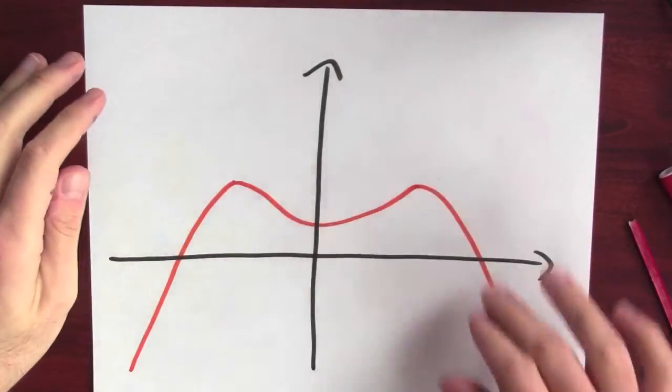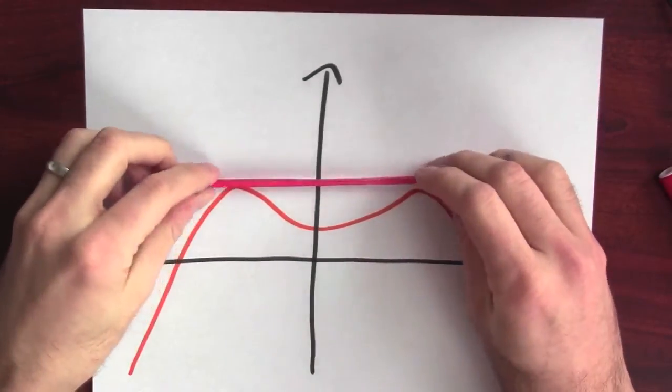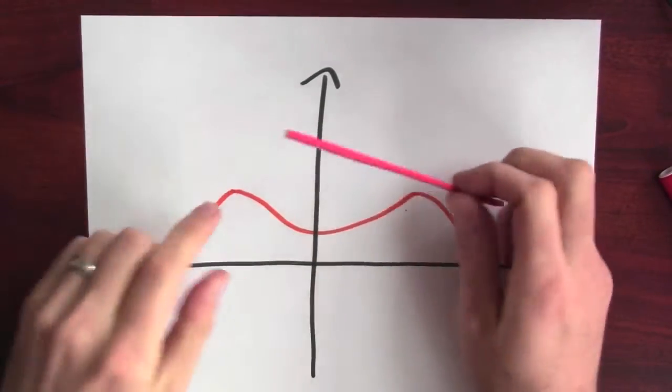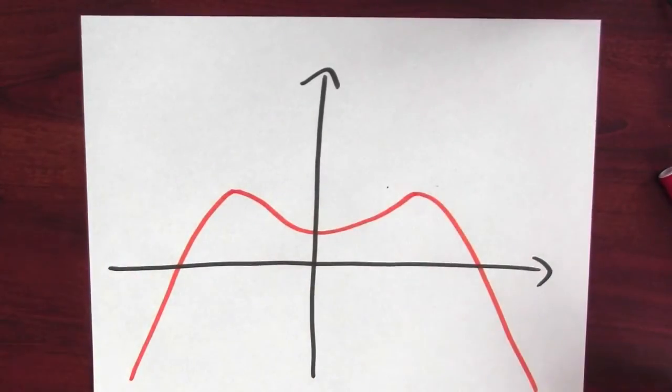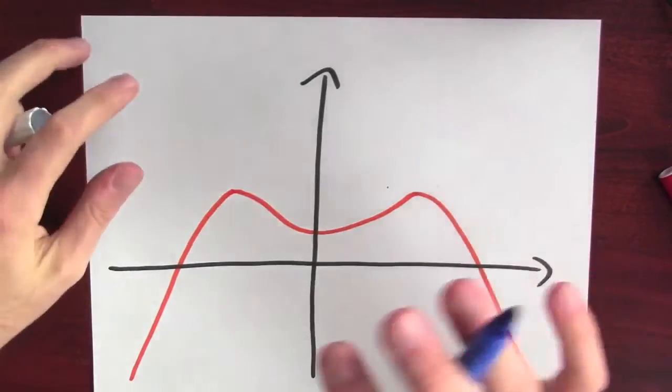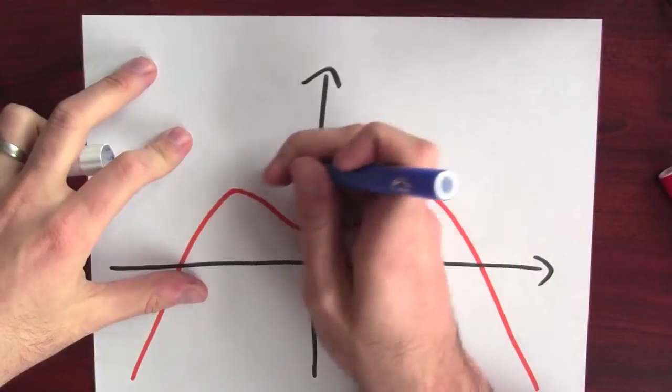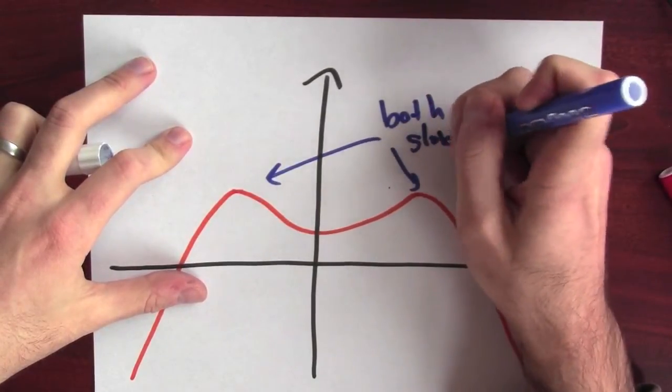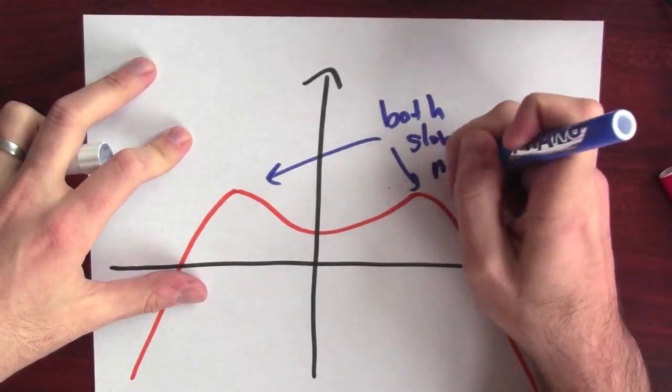There can definitely be multiple local maximums, but there can also be multiple global maximums. So here I've drawn another graph where I've rigged it so that these two output values are the same. So these are both local maximums, but they're also both global maximums. So in this case, these are both global and also local maximums.